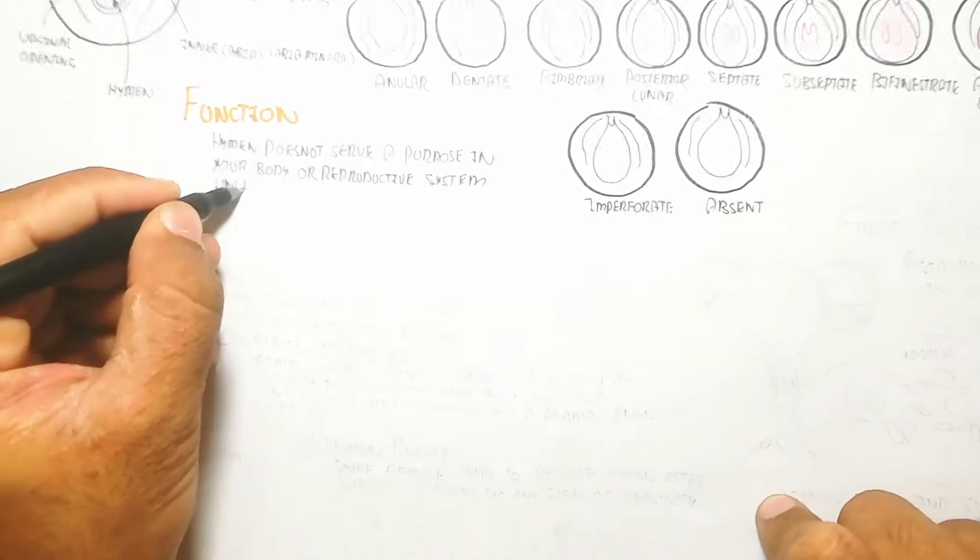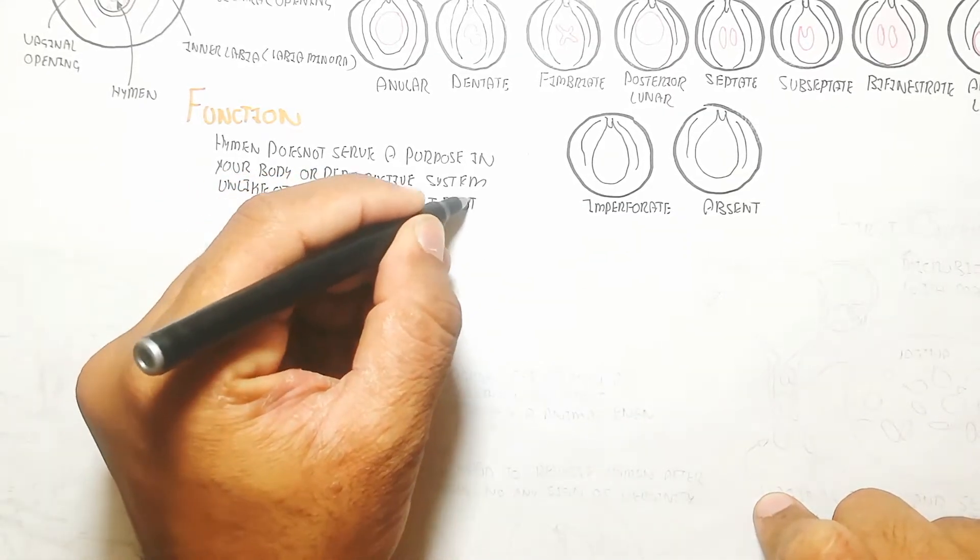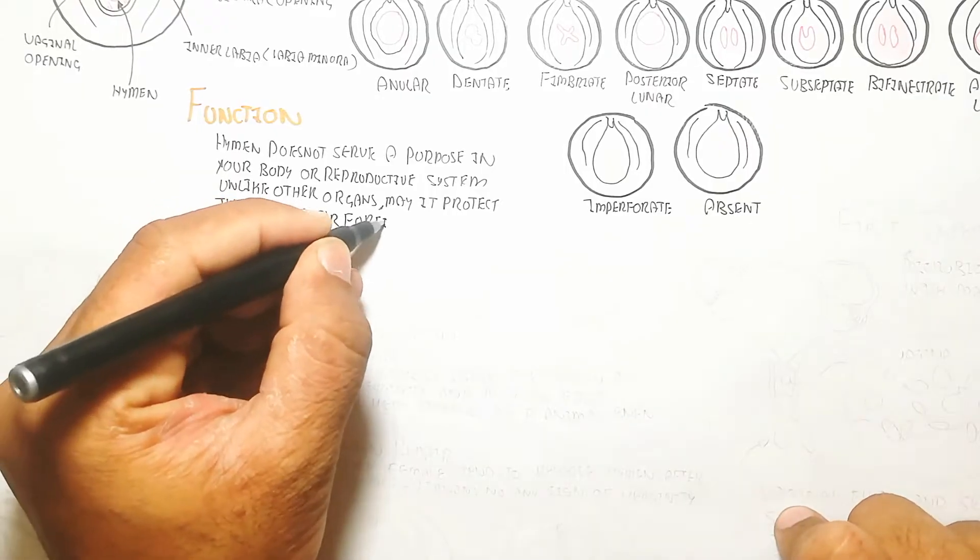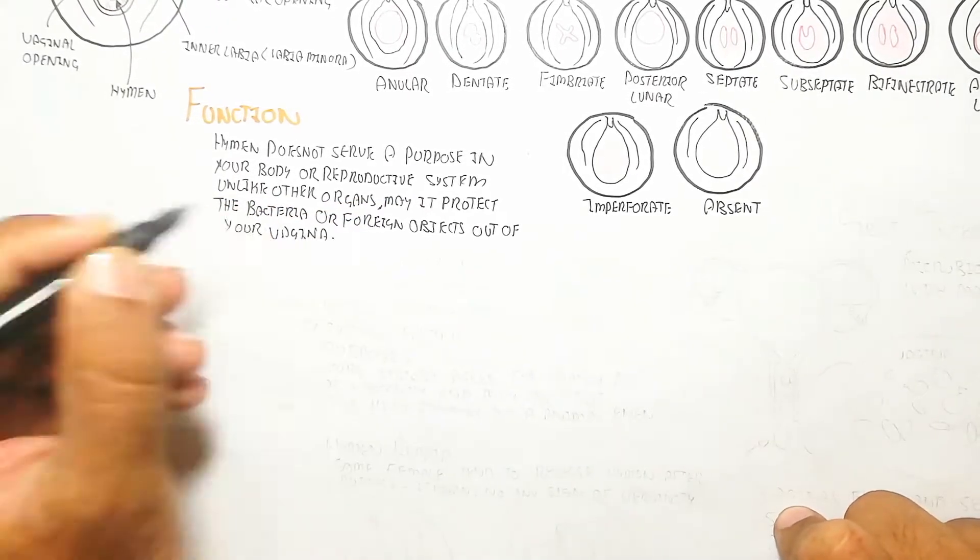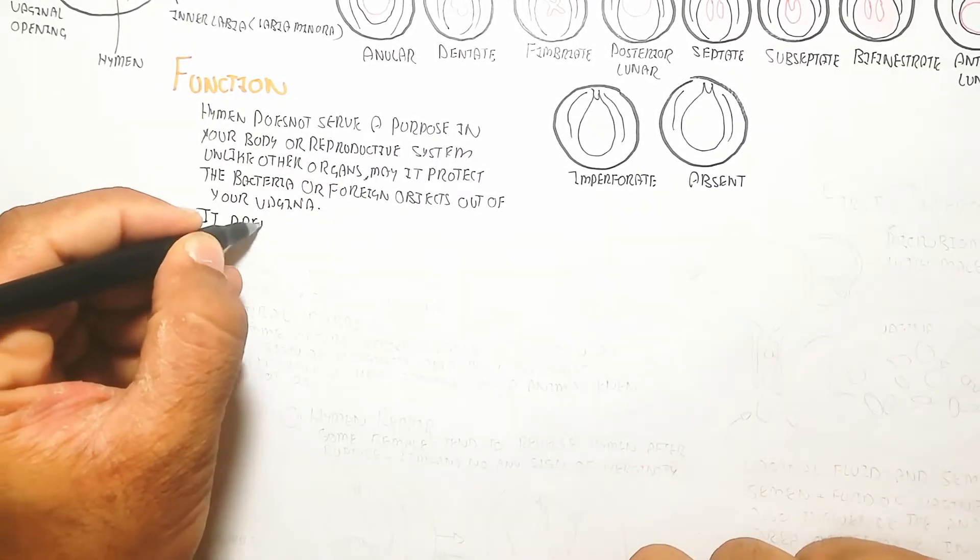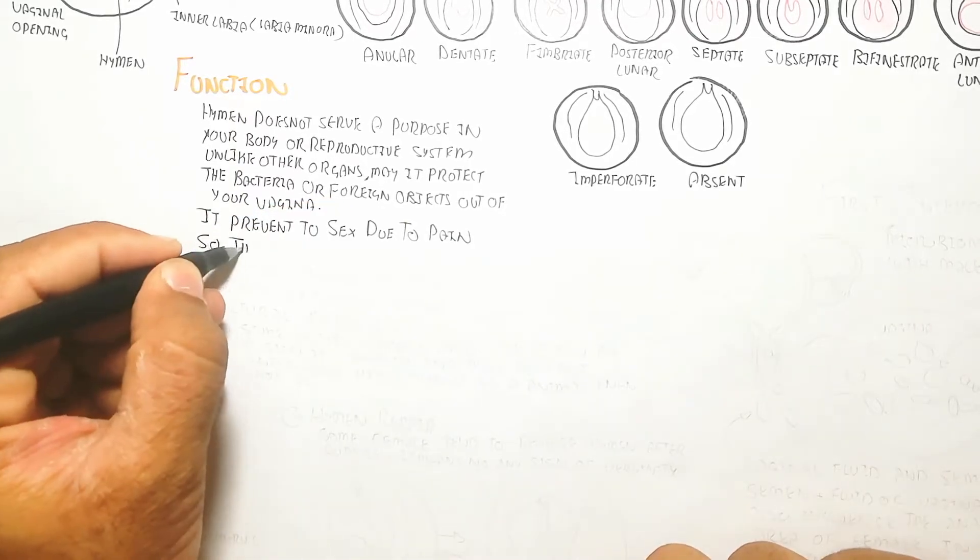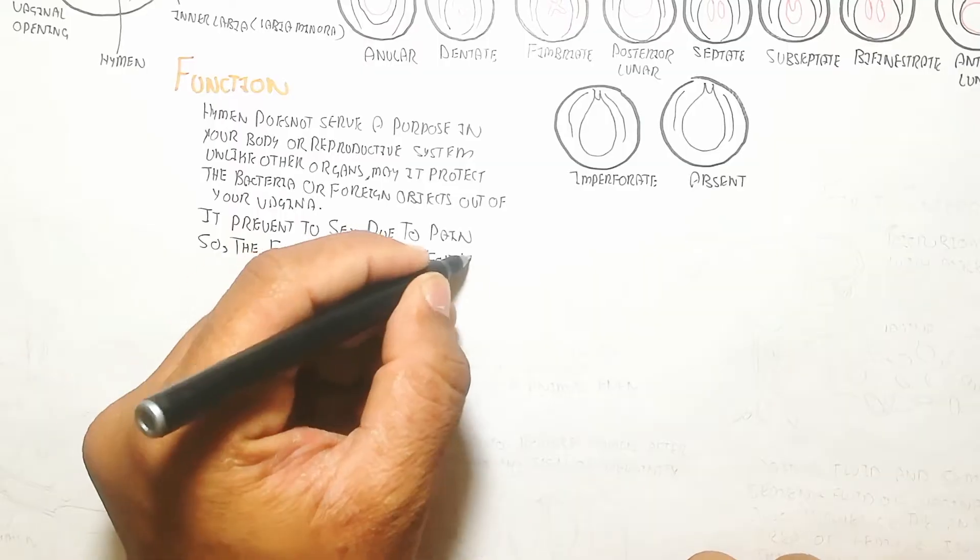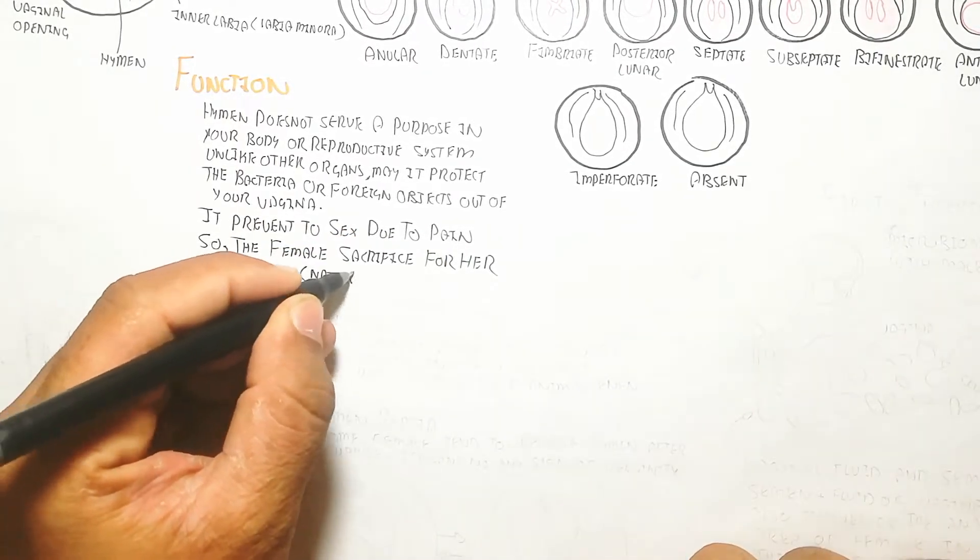Remember all these types. Function of hymen: the hymen does not serve a necessary purpose in your body's reproductive system. Unlike other organs, it may protect against bacteria or foreign objects out of your vagina. It may prevent sex due to pain.